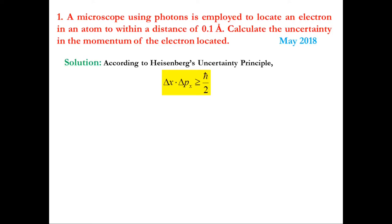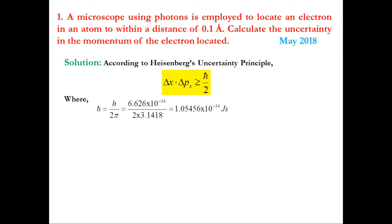In this problem, we need to find the uncertainty in momentum of the electron, that is Δpx. Δx is given as 0.1 angstrom. ħ equals h divided by 2π, which gives 1.0545×10⁻³⁴ J·s. Since 1 angstrom equals 10⁻¹⁰ m, Δx becomes 0.1×10⁻¹⁰ m.